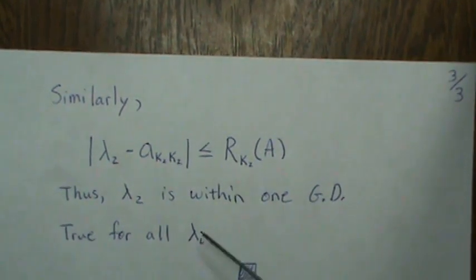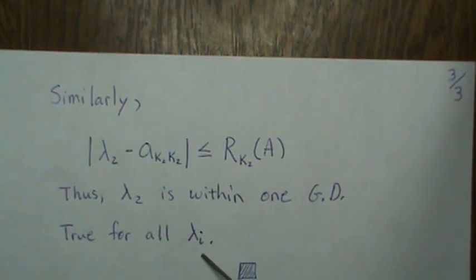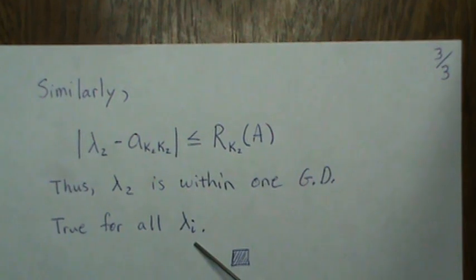Okay, well this is true for all lambda i, so all the lambdas. So if we take the Gershgorin disk of each row and then take the union, then all the lambdas or all the eigenvalues are within the Gershgorin disk, and the theorem is proved.